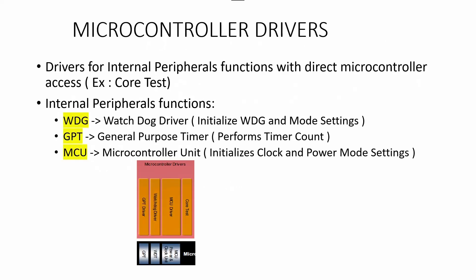First, we can start from Microcontroller Drivers — drivers for internal peripheral functions with direct microcontroller access. Examples include the watchdog timer driver, general purpose timer, and microcontroller unit. The watchdog timer driver initializes the watchdog and performs mode settings. The general purpose timer performs timer counting. The microcontroller unit initializes the clock and performs power mode settings. Each microcontroller driver is tightly coupled with each on-chip peripheral device.